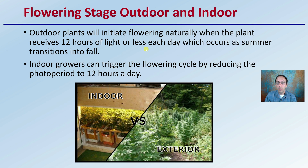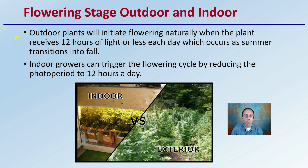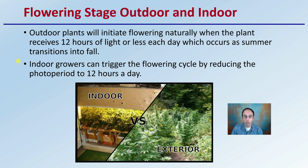Flowering stage for outdoor and indoor production: outdoor plants will initiate flowering naturally when the plant receives twelve hours of light or less each day, which occurs in the summer transition into fall. Indoor growers can trigger the flowering cycle by reducing the photo period to twelve hours a day, so they have a little bit more control and better timing of when that exactly occurs.